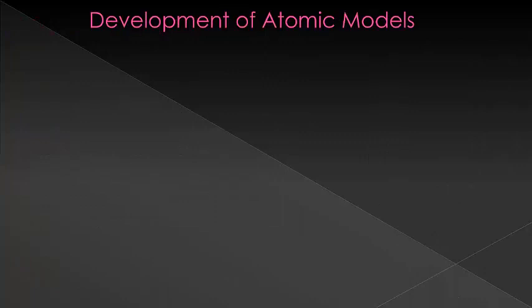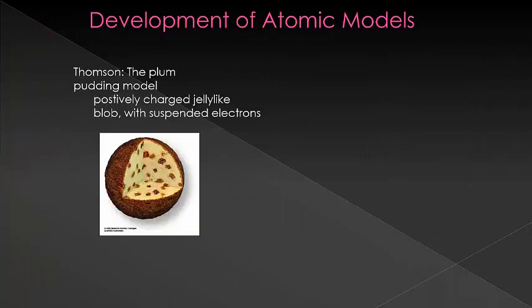Here are three of the proposed atomic models that were suggested. The plum pudding model was suggested before the discovery of the nucleus, and it was thought that the whole atom could be made up of a positively charged jelly-like substance with suspended electrons inside of it.